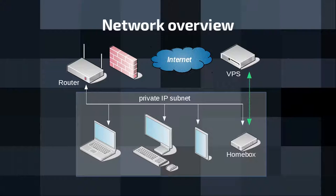Let me talk you through the network setup. In the lower half we have the home network, which is behind the home router with private IP addresses, and this is the homebox — where the private cloud will run. The dotted green line is the VPN tunnel, and the VPS running on the hostile internet provides its IP address to your homebox.